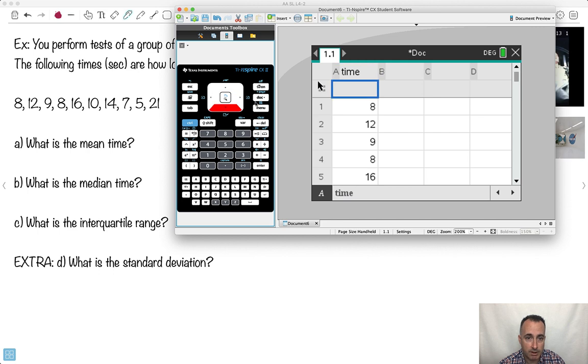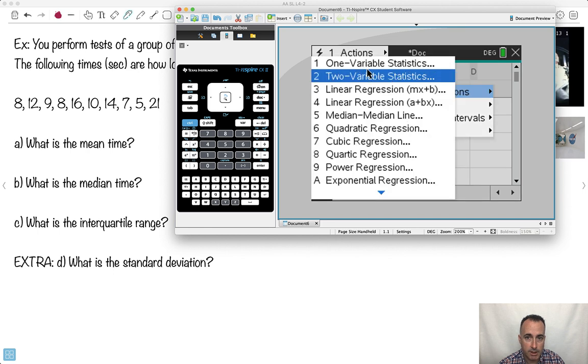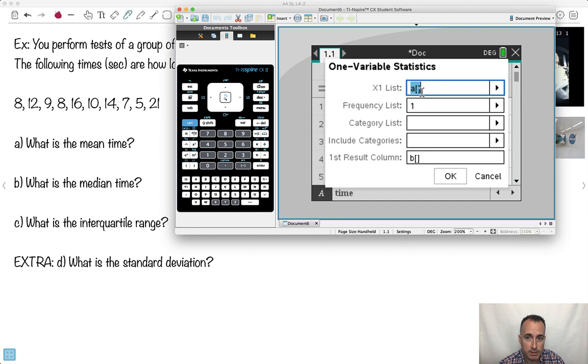Well in the TI Inspire, at least you press menu, and you say please give me some statistics, and please do a calculation. I would like one variable statistics, and I only have one list. What is my X list, there, I just like to use the right arrow, so I actually click on the right arrow here, and usually then it gives you a choice, and I'll choose time.